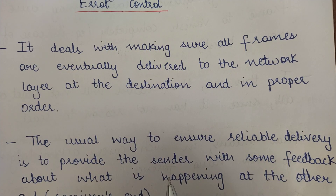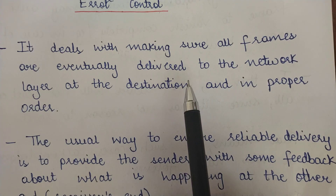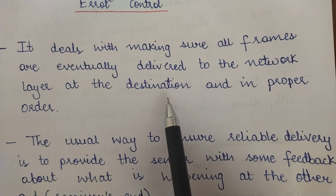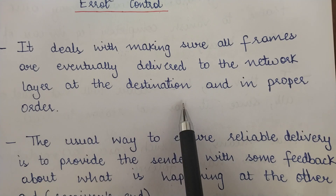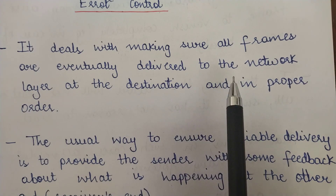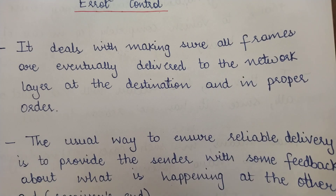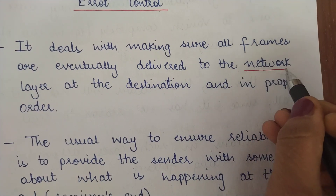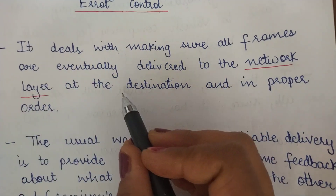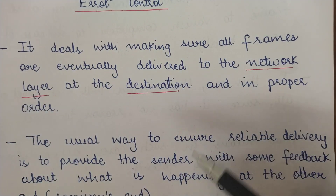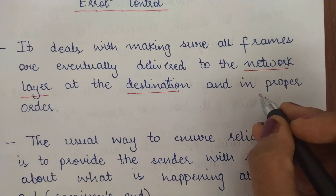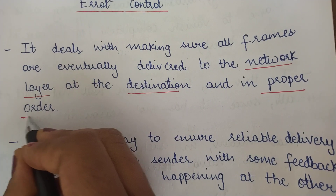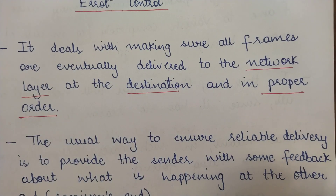This is the task of the data link layer. It ensures that all the messages sent by the sender have been properly received by the receiver and by the network layer of the receiver. The network layer at the destination properly receives those messages in the same order in which they were sent.